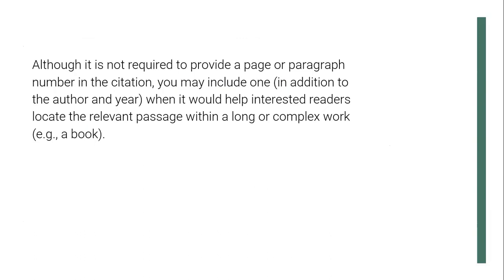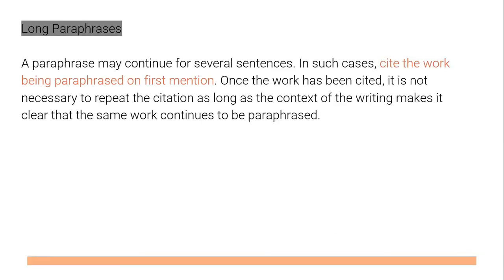In the latest edition of APA, if you're going to provide a paraphrased version of a passage, it's not necessary to include the page of the passage in the source material. But if you're going to do a direct quotation, you have to include the page. If you read a paraphrase or a primary source in a published work and want to cite that source, it is best to read and cite the primary source directly if possible. If not, use a secondary source citation. For long paraphrases, a paraphrase may continue for several sentences. In such cases, cite the work being paraphrased on first mention. Once the work has been cited, it is not necessary to repeat the citation as long as the context makes it clear that the same work continues to be paraphrased. If you already cited the author in the paragraph, that is already enough.